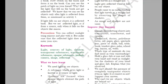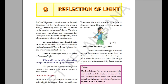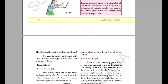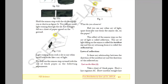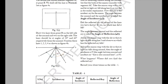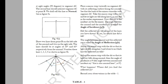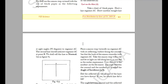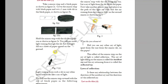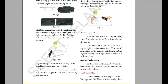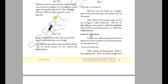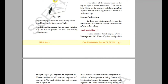In the 7th class textbook, there is a topic about reflection of light. You may have learned the definition of reflection of light, angle of incidence, angle of reflection, and the law of reflection. There will be some experiments. The law of reflection is discussed, and reflection is nothing but when a light falls on an object it reflects back.